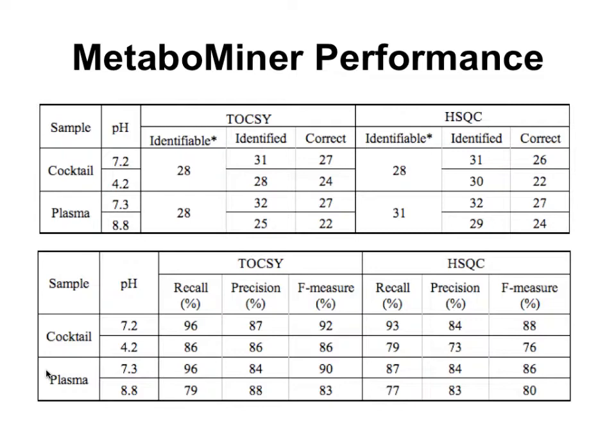We did a number of tests. It's essentially semi-automated, so you don't have to do all of the phasing and other steps — you can just upload the data. It was hovering around about 90% correct in terms of precision and recall, looking at both TOCSY and HSQC, and it was identifying 30–35 compounds in a sample. That got people intrigued with the idea that it might be possible to automate what you spent your morning doing. MetaboMiner is still used and cited as one of the first examples of this opportunity for semi-automation.